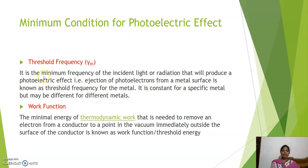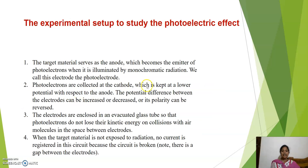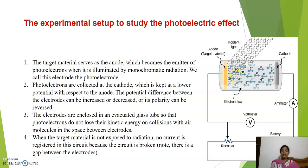So we have two conditions of the photoelectric effect. The first is threshold frequency — the minimum frequency at which emission of an electron takes place. The second term is work function — the minimum energy required to remove an electron from the metal surface is called the work function. This is the experimental setup to study the photoelectric effect. The target material serves as an anode, which becomes an emitter of photoelectrons. The cathode collects the electrons, and they are enclosed in an evacuated glass tube so that the photoelectrons do not lose kinetic energy through collisions.